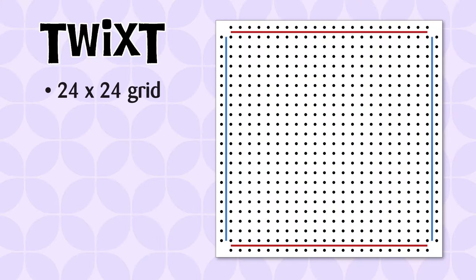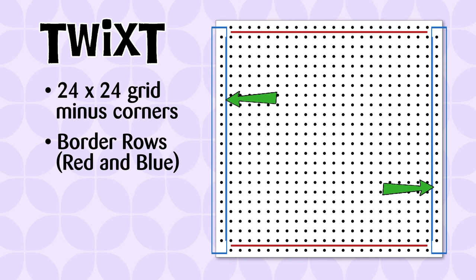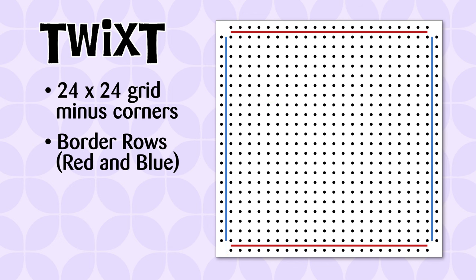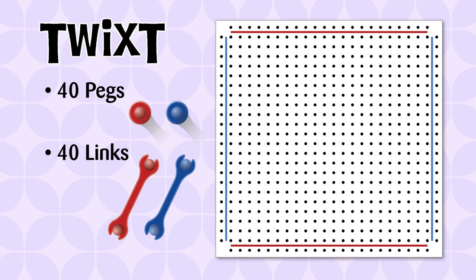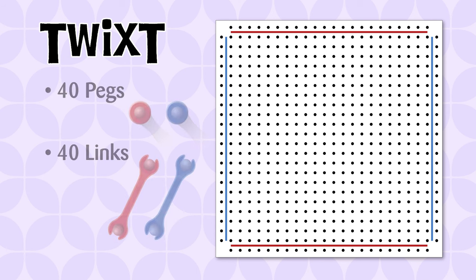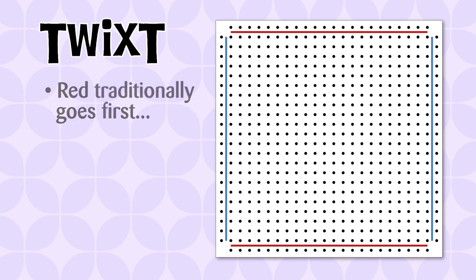The board is a 24 by 24 grid of holes, minus the corner holes. The rows around the edges are called the border rows. The two red border rows are opposite to each other, and the black border rows are along the other two sides. Some sets use different colors. Each player has 40 pegs and 40 links in their chosen color, and the board begins empty. The object of the game is to connect your two border rows with a complete uninterrupted chain of pegs and links before your opponent can do the same.